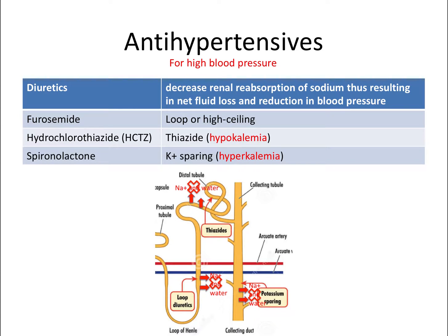Diuretics can also affect blood potassium levels. Thiazide diuretics can cause potassium levels to drop too low — called hypokalemia. If you're on a potassium-sparing diuretic, you can have the opposite issue: too much potassium in your blood, called hyperkalemia. Both are potential issues that can cause life-threatening arrhythmias. For the board exam, know that thiazide diuretics can cause decreased blood potassium and may require a potassium supplement, while potassium-sparing diuretics can cause the opposite problem.